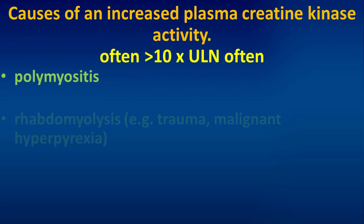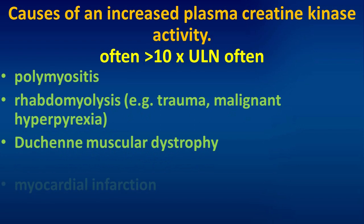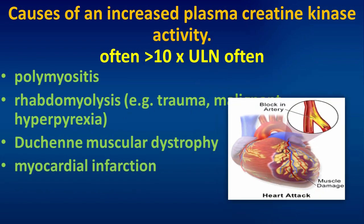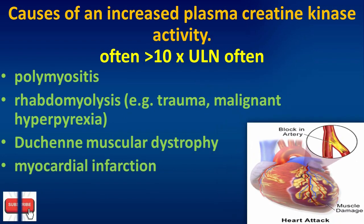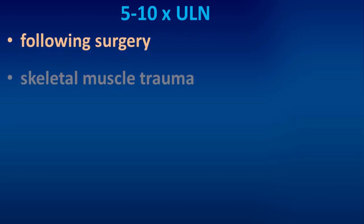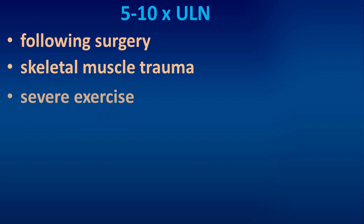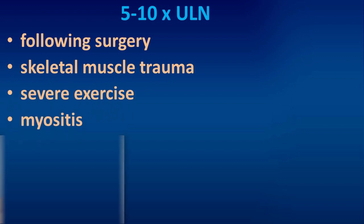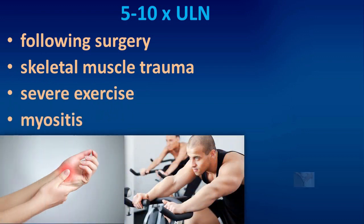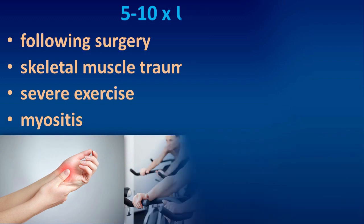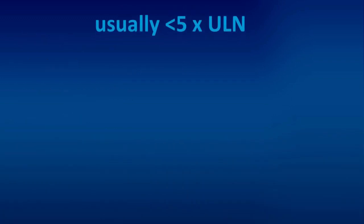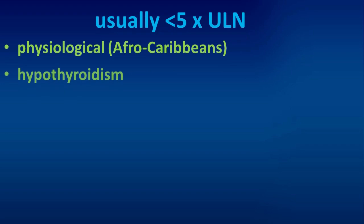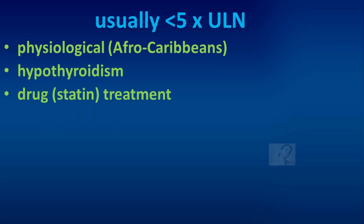Causes of increased plasma creatine kinase activity — often more than 10 times the upper limit of normal — include polymyositis, rhabdomyolysis, Duchenne muscular dystrophy, and myocardial infarction. Five to ten times the upper limit of normal is seen following surgery, skeletal muscle trauma, severe exercise, and myositis. Usually less than five times the upper limit normal: physiological, hypothyroidism, and drug treatment.